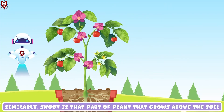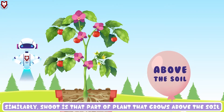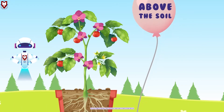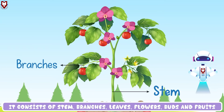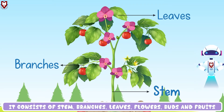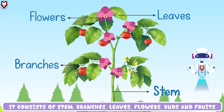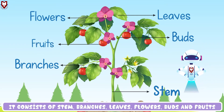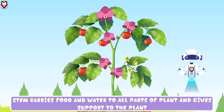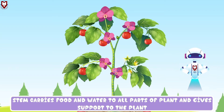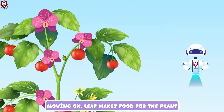Similarly, shoot is the part of the plant that grows above the soil. It consists of stem, branches, leaves, flowers, buds and fruits. Stem carries food and water to all parts of the plant and gives support to the plant.